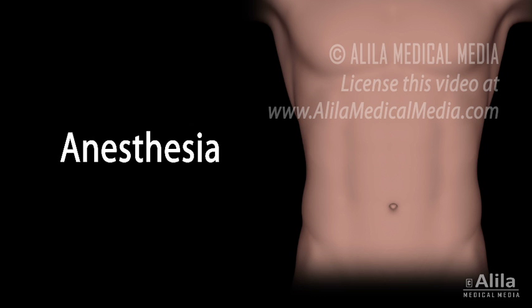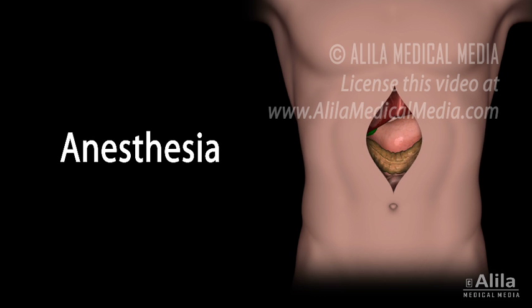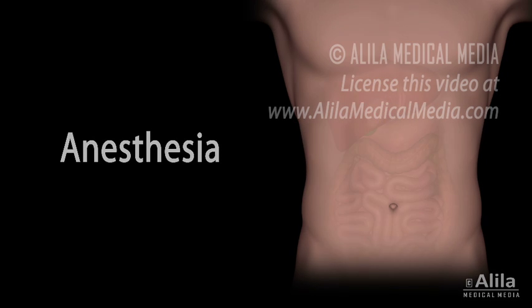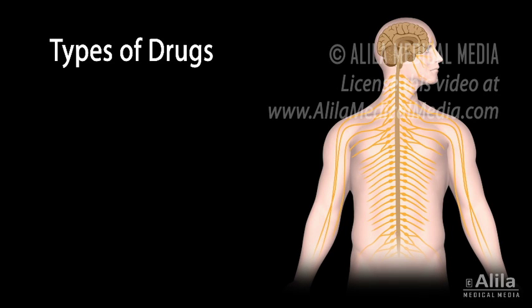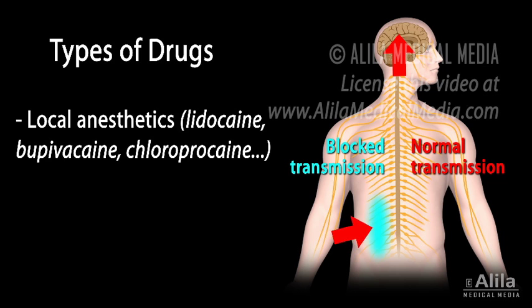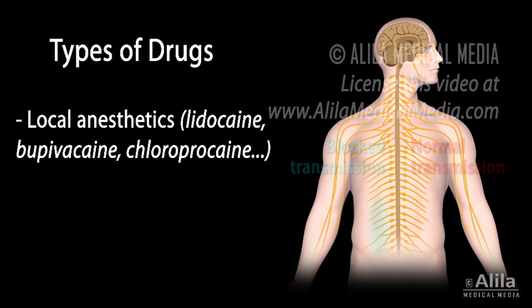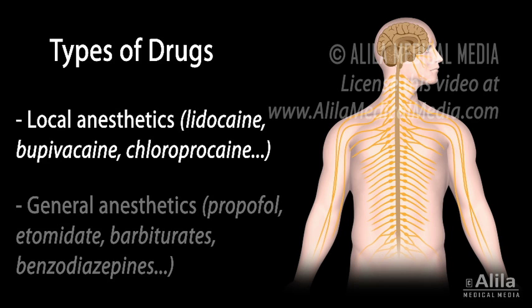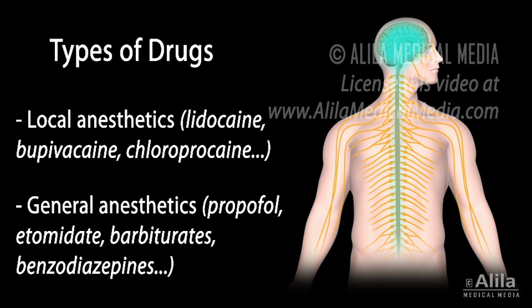Anesthesia is the use of drugs to prevent or reduce pain during a medical procedure. There are two major classes of drugs: local anesthetics, which block transmission of pain signals from peripheral nerve endings to the central nervous system, and general anesthetics, which act on the central nervous system itself to induce unconsciousness and total lack of sensation.